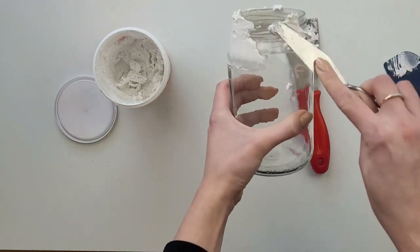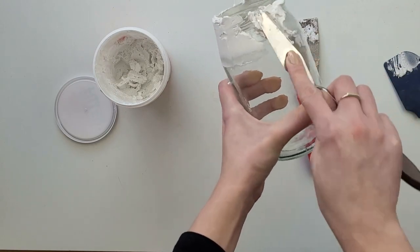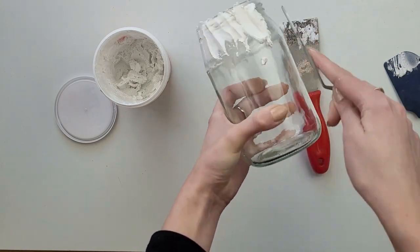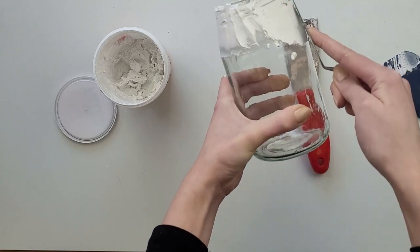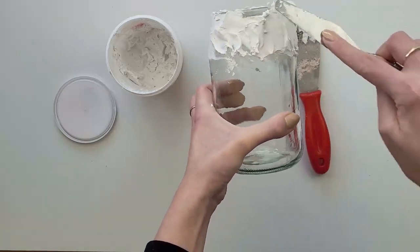I take a small amount of filler at a time and spread it around the top part of the jar. I want to cover all those lines and make this jar look more smooth and even.